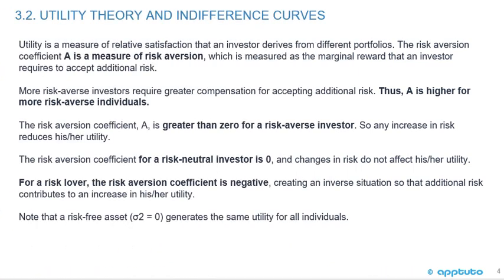Utility is a measure of relative satisfaction that an investor derives from different portfolios. The Risk Aversion Coefficient A is a measure of risk aversion, measured as the marginal reward that an investor requires to accept additional risk. More risk-averse investors require greater compensation for accepting additional risk. Thus, A is higher for more risk-averse individuals.